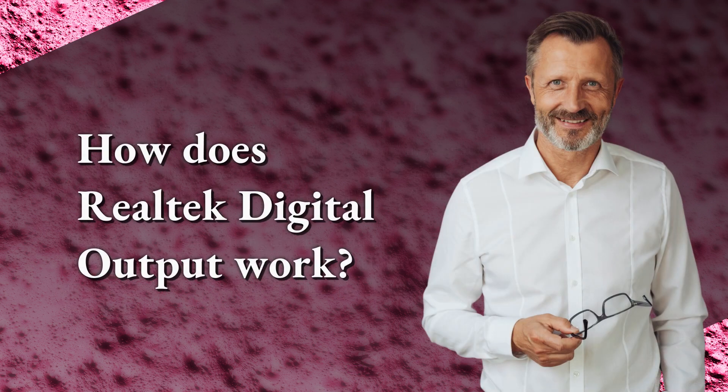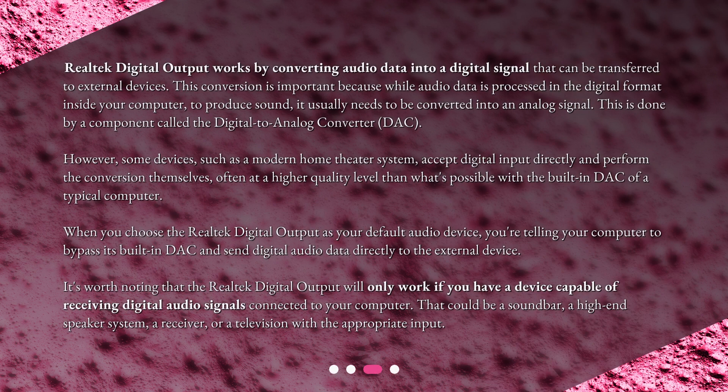How does Realtek Digital Output work? Realtek Digital Output works by converting audio data into a digital signal that can be transferred to external devices. This conversion is important because while audio data is processed in digital format inside your computer, to produce sound it usually needs to be converted into an analog signal. This is done by a component called the Digital to Analog Converter, or DAC. However, some devices, such as a modern home theater system, accept digital input directly and perform the conversion themselves,